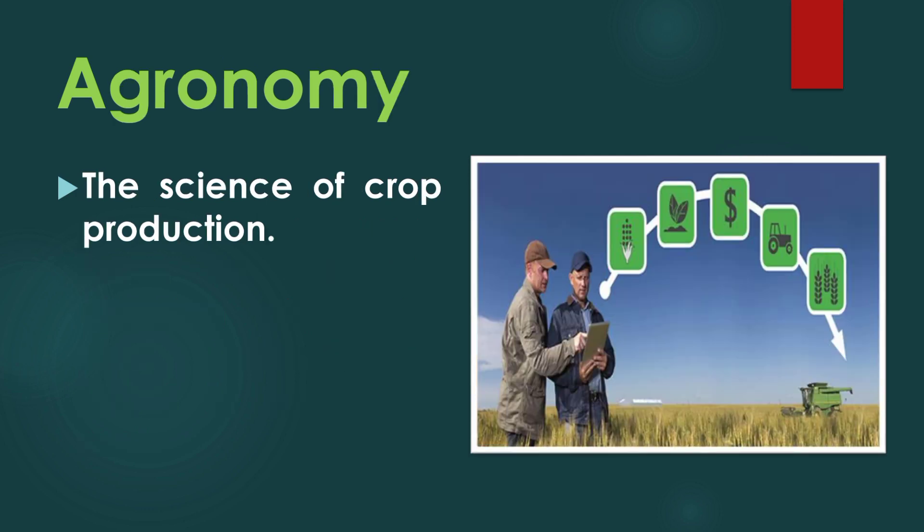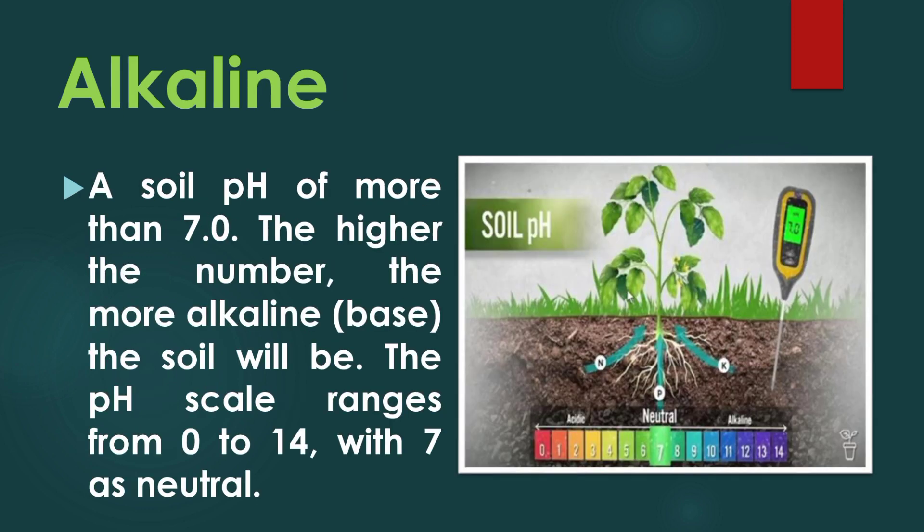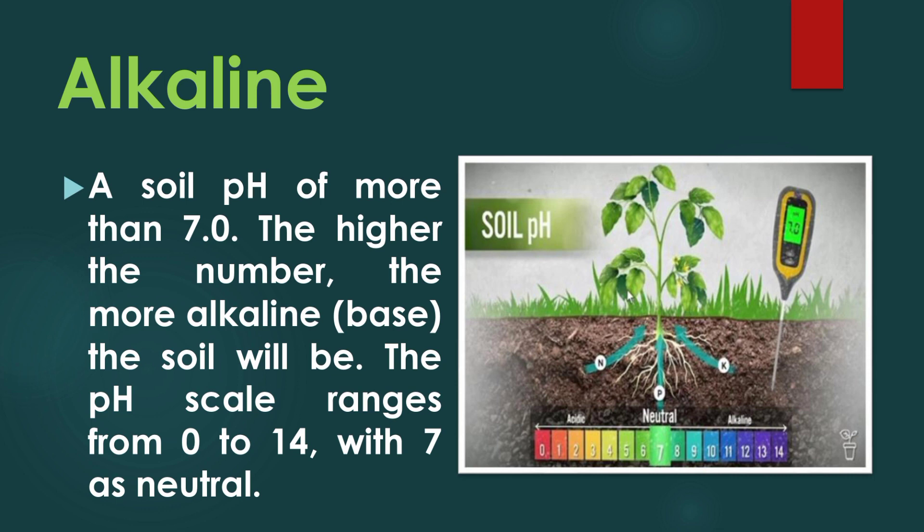Agronomy: the science of crop production. Alkaline: a soil pH of more than 7.0. The higher the number, the more alkaline base the soil will be. The pH scale ranges from 0 to 14, with 7 as neutral.